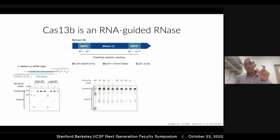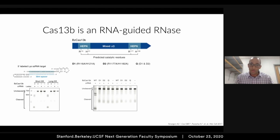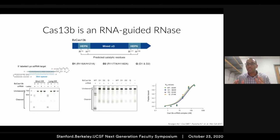We also identified the catalytic residues responsible for RNA cleavage, which are found within the HEPN domains. If you mutate those residues, you can abrogate cleavage, as shown in this in vitro gel in the center of the screen. But importantly, if you do a gel shift assay with those same point mutants in the HEPN domains, it does not affect the binding strength to an RNA target. So for our purposes, this means Cas13b has the potential to serve as a programmable RNA binding protein to recruit ADAR to transcripts.